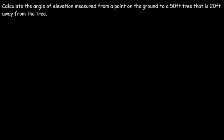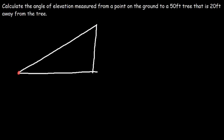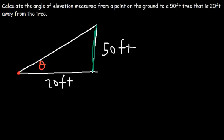Let's try the next problem: Calculate the angle of elevation measured from a point on the ground to a 50-foot tree that is 20 feet away. For all these problems, you're going to draw a right triangle. Let theta be the angle at the observation point. The height of the tree is 50 feet, and the distance from the tree is 20 feet. Given the height and distance, how can we calculate the angle of elevation?